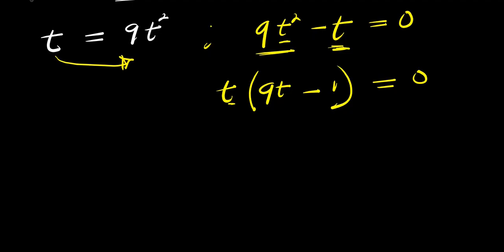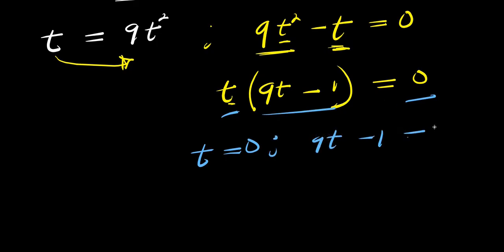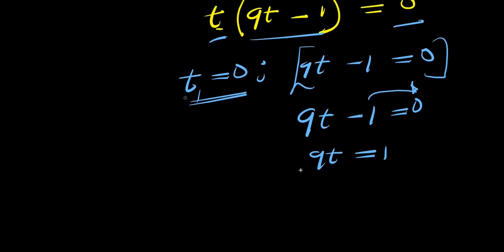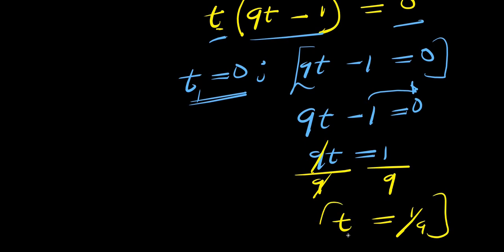At this point I can equate each factor to 0. From t equals 0, this is our first solution. For the other factor, I have 9t minus 1 equals 0. Moving negative 1 over gives 9t equals 1. Dividing both sides by 9, I have t equals 1 over 9. So this becomes my second solution.